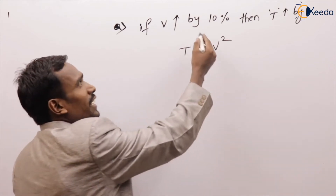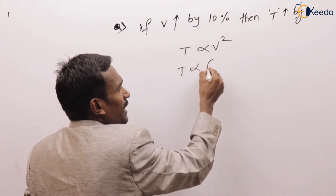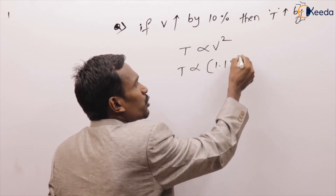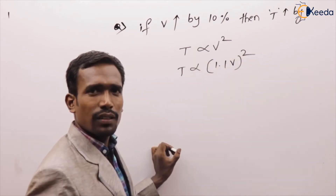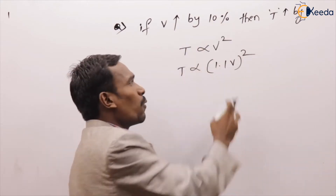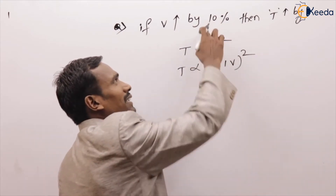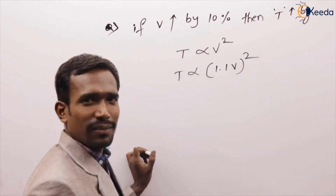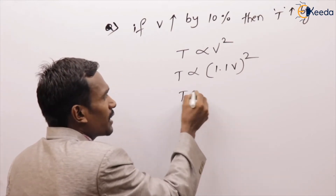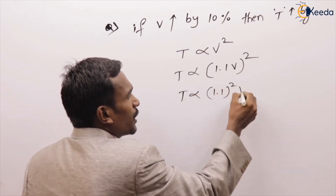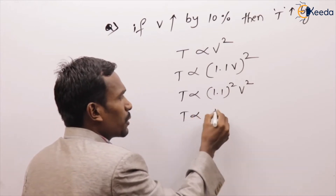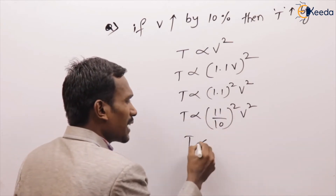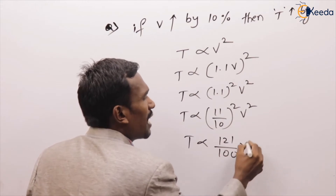If voltage increased by 10%, that means voltage becomes 1.1 × V. So torque is directly proportional to 1.1 squared into V squared, which is 11/10 whole squared into V squared. So torque is directly proportional to 121% of V squared.